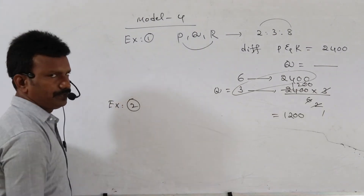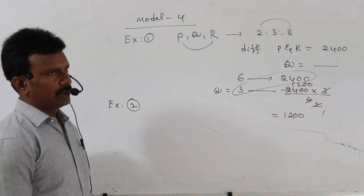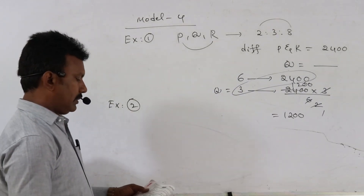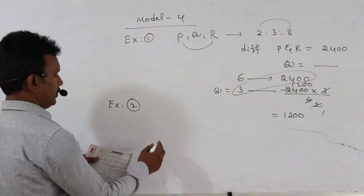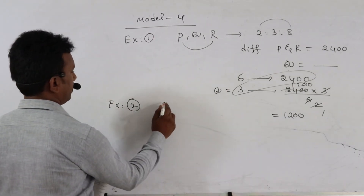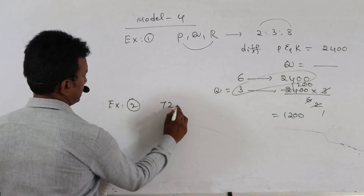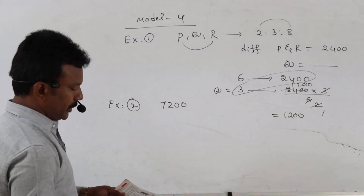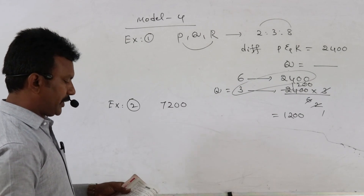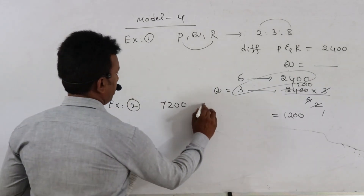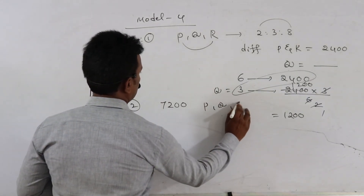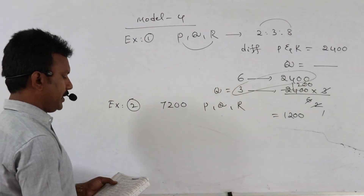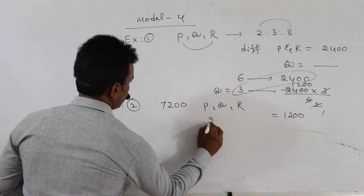Example 2 in Model 4. An amount of 7,200 rupees is distributed among P, Q, and R in the ratio 2 is to...